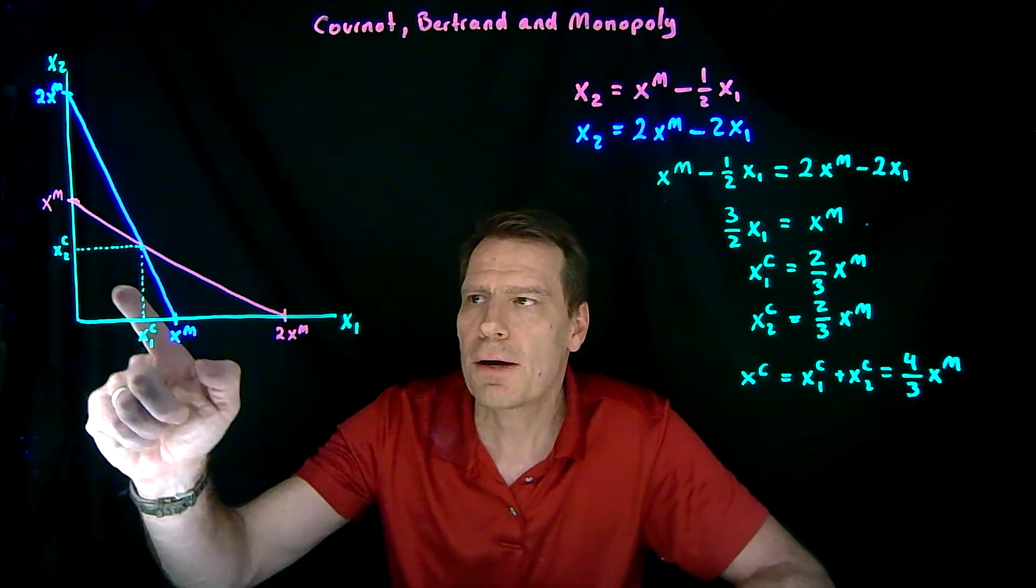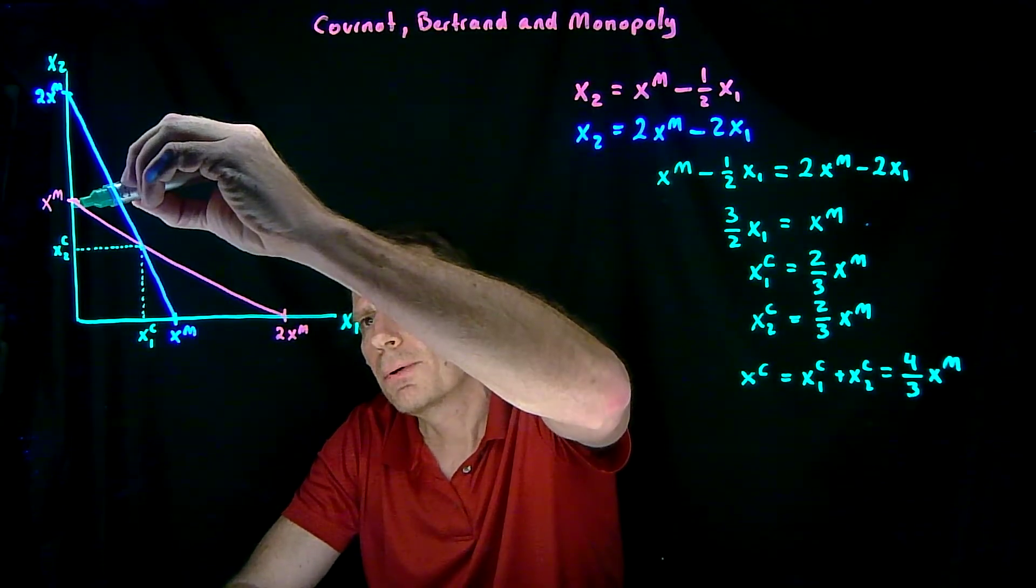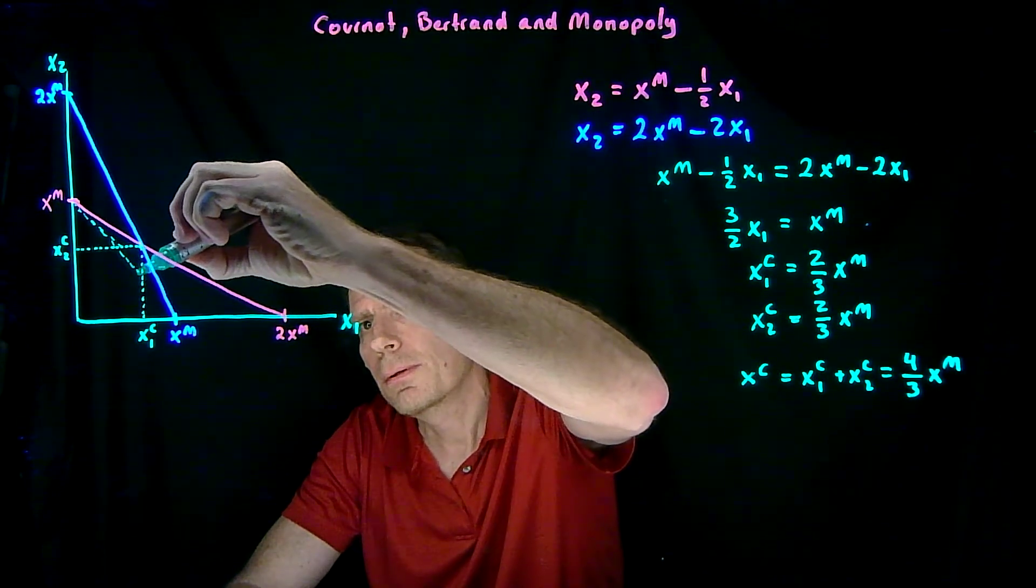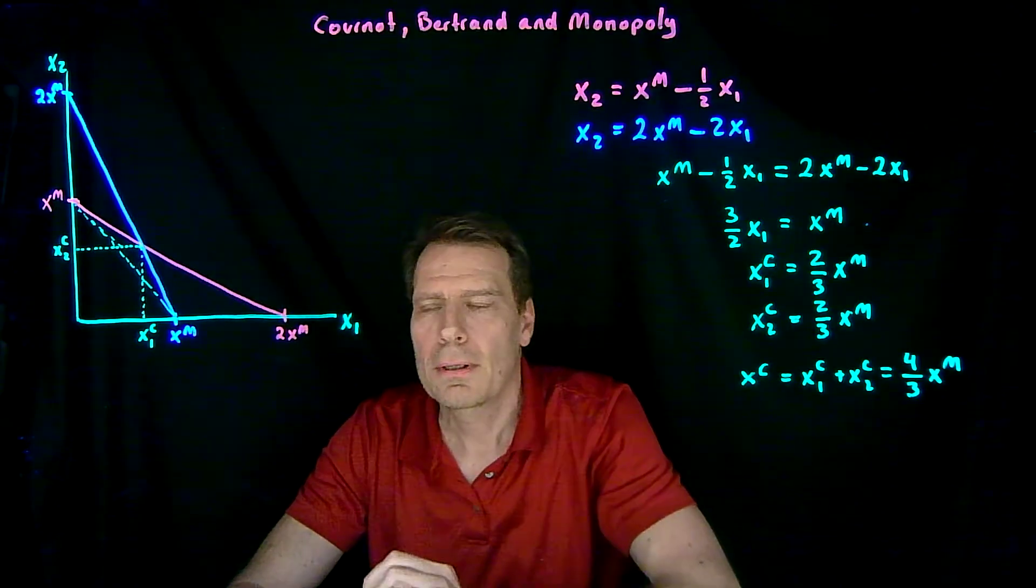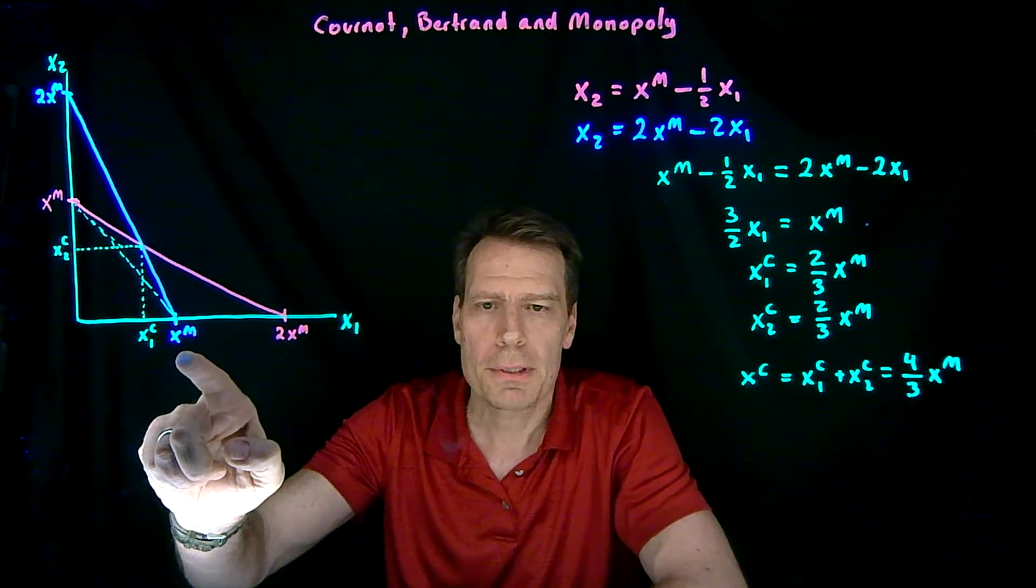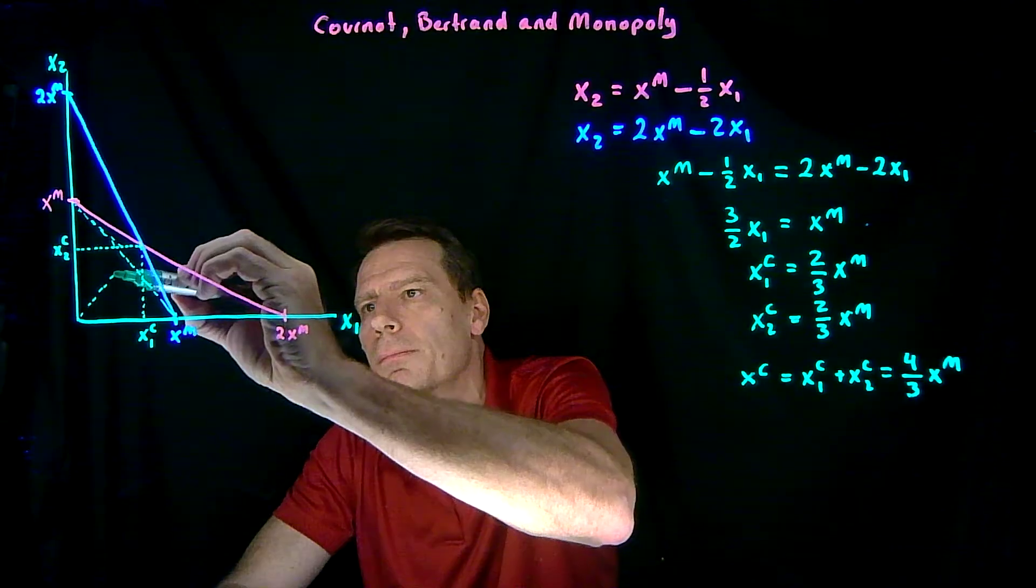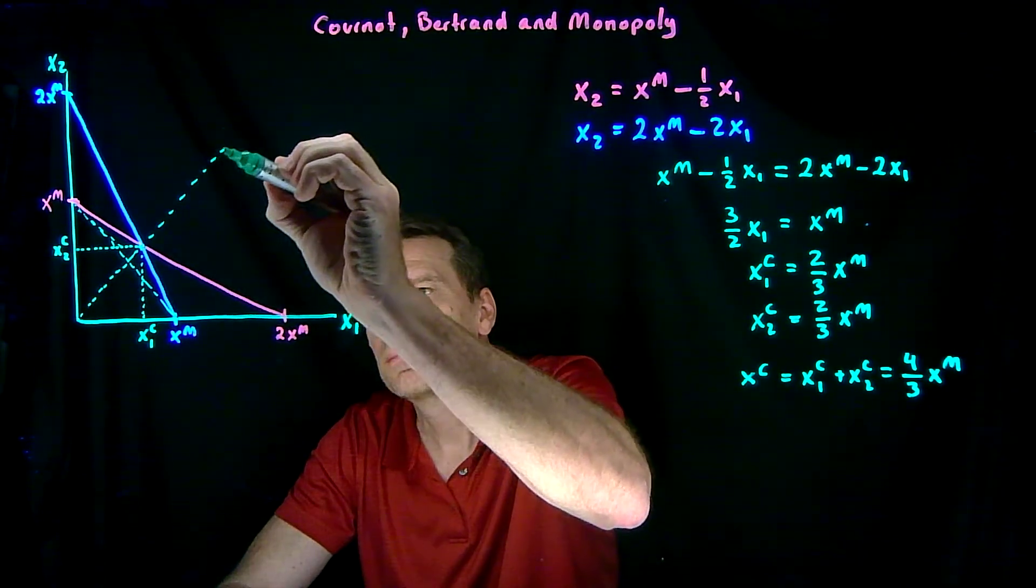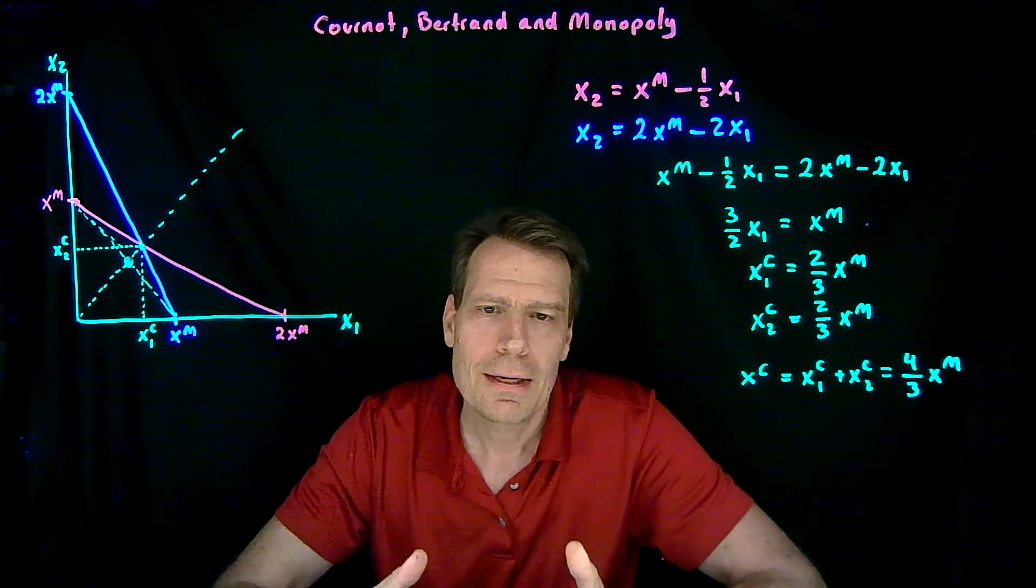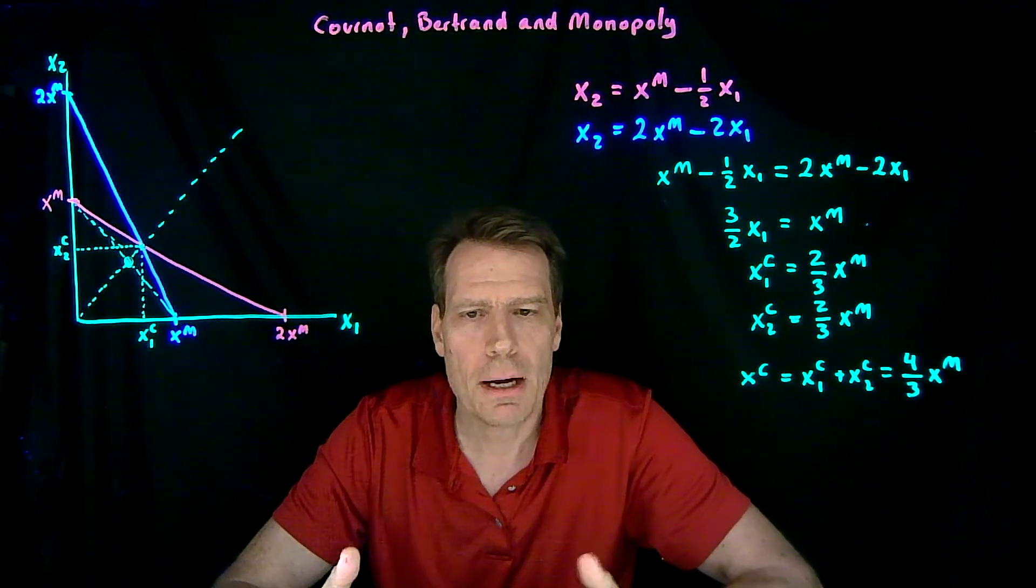And we can see how these quantities relate to each other in this picture. If we put in a dotted line from this intercept to this intercept, then every quantity combination on that line sums to the monopoly quantity. So if I put a 45 degree line in, and we pick this point, that would be the point that would happen if the two firms get together and decide to behave as a single monopoly and split the monopoly quantity.